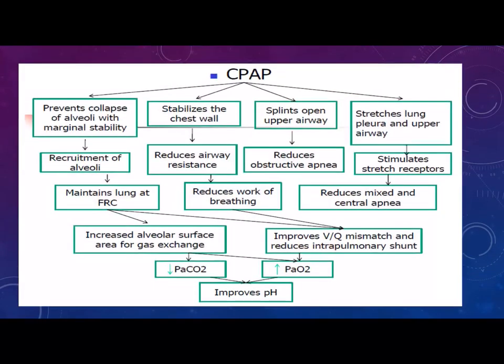This algorithm shows the overall effect of CPAP. Always remember: preventing alveolar collapse leads to good recruitment, maintaining functional residual capacity, decreasing VQ mismatching, and improving oxygenation, which prevents or decreases metabolic acidosis. Good alveolar recruitment also increases the surface area of the alveoli, decreasing alveolar dead space, helping wash out carbon dioxide and improving or decreasing respiratory acidosis.